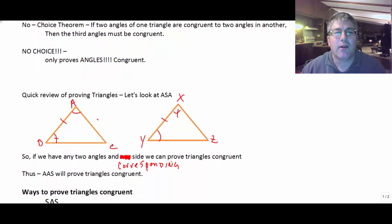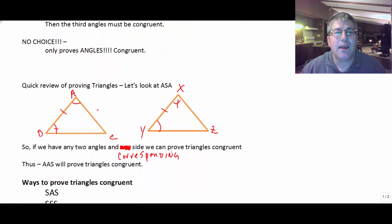But speaking of proving triangles congruent, let's take a look at proving triangles congruent by angle-side-angle. We have angle-side-angle. That must mean we have two congruent angles in a triangle, two congruent corresponding angles, and a corresponding side. So here I have triangle ABC is congruent to triangle YXZ. Notice I flipped my correspondence here with the angle, but that's okay.